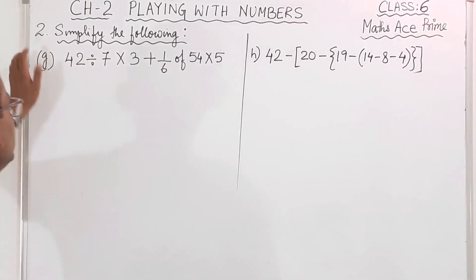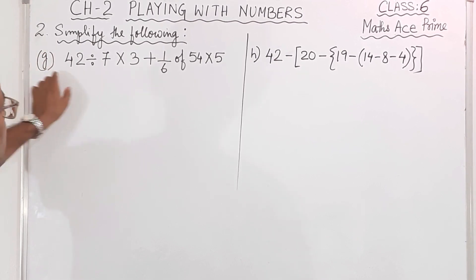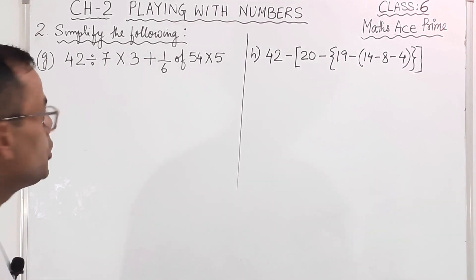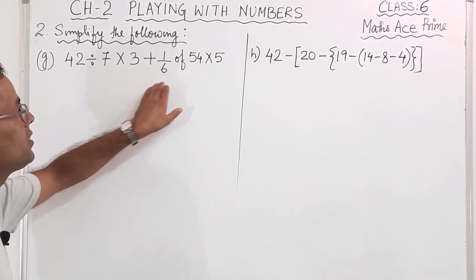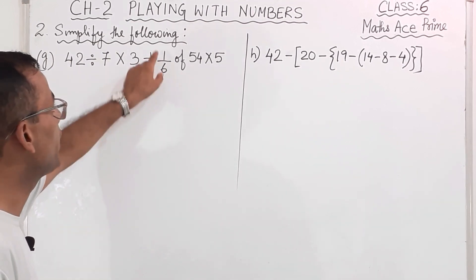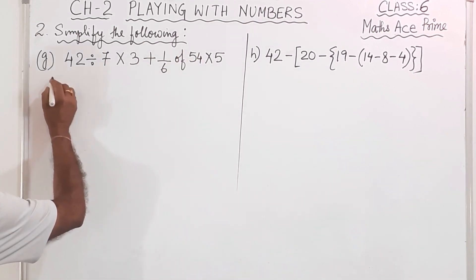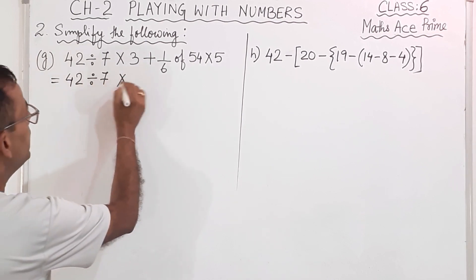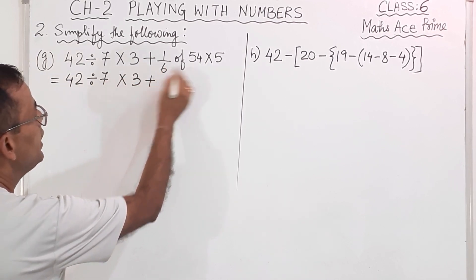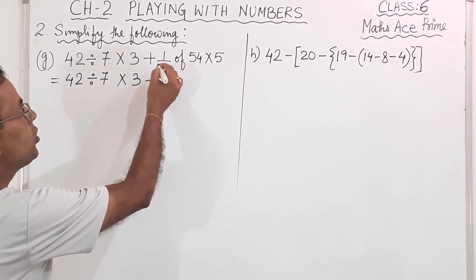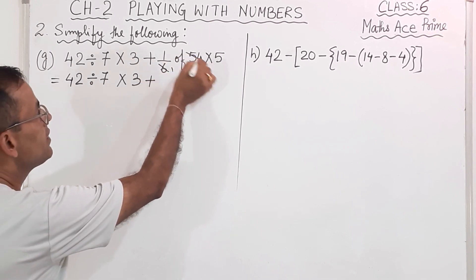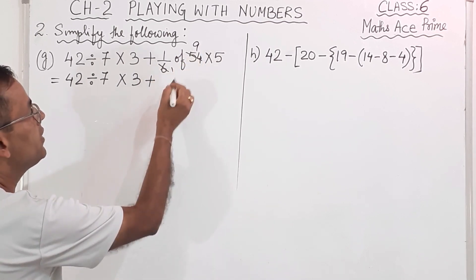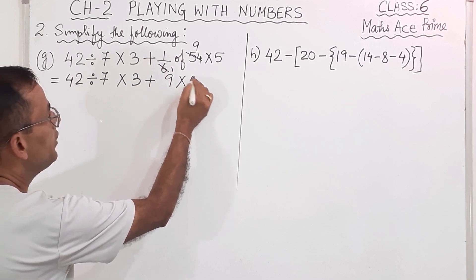Now Class 6 students, let us solve question number 2G. So we will see bracket — bracket is not there — after that 'off', so 'off', we can see here, so this part I will solve first: 1/6 of 54. So what I will write: 42 divided by 7 into 6 plus. Now 1/6 of 54 — we can cut 6 — 9s are 54. So 1 into 9 is 9.